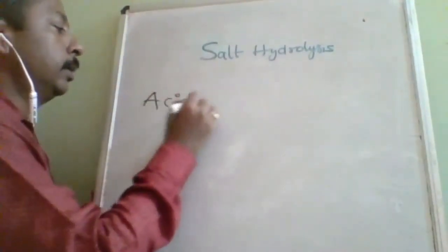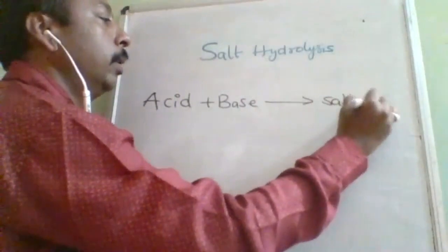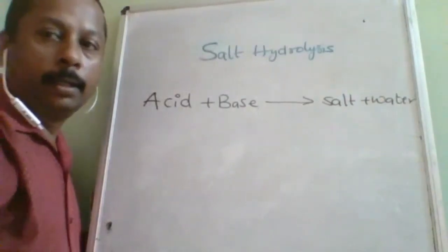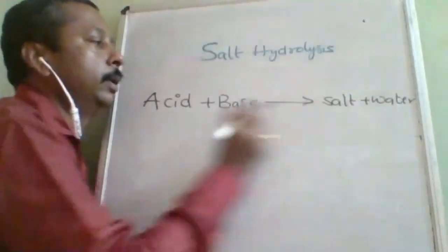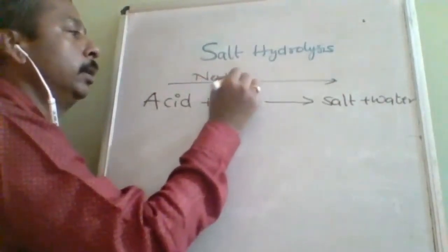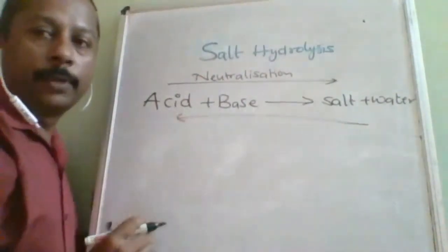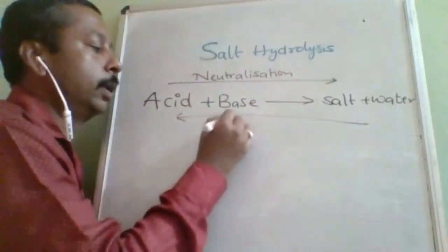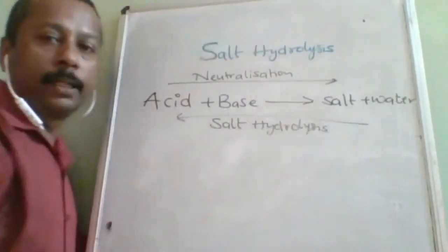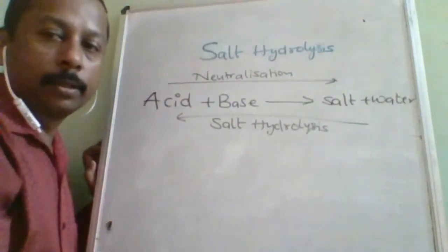Everybody knows that when an acid reacts with a base it will form salt and water. But here we are going to study in the reverse direction. If you go in the forward direction, this is called neutralization. But if you come in the reverse direction, then only it is called salt hydrolysis.